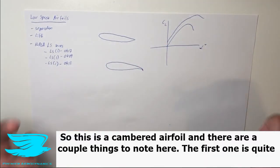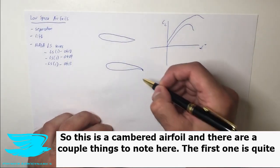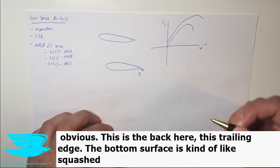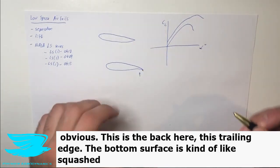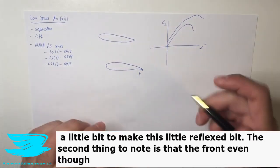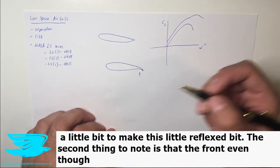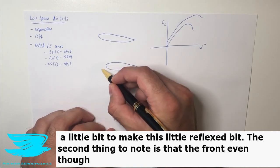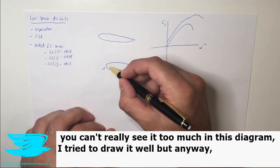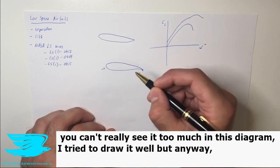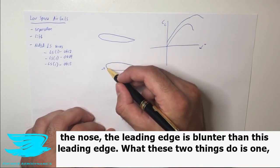So this is a cambered airfoil and there are a couple things to note here. The first one is quite obvious: this trailing edge, the bottom surface is kind of squashed a little bit to make this little reflex bit. The second thing to note is that the front, even though you can't really see it too much in this diagram I've tried to draw it well, but anyway the nose, the leading edge is blunter than this leading edge.